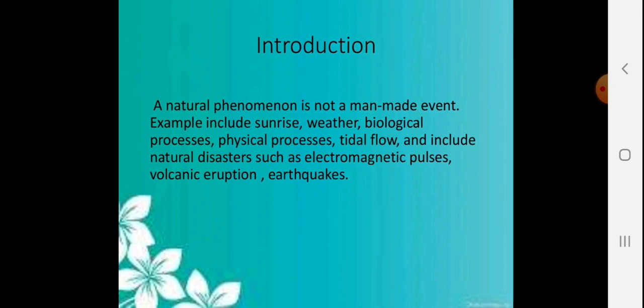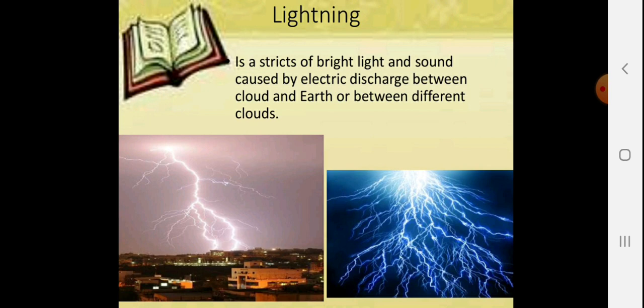Examples include sunrise, weather, biological processes, physical processes, tidal flow, and include natural disasters such as electromagnetic pulse, volcanic eruption, and earthquakes. Lightning is a strike of bright light and sound caused by electric discharge between the cloud and earth or between different clouds.